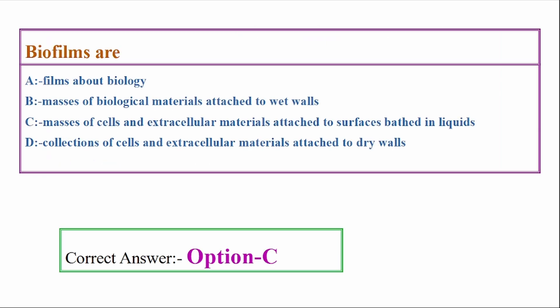Biofilms are: Options - films about biology, masses of biological materials attached to wet walls, masses of cells and extracellular materials attached to surfaces in liquids, collections of cells and intracellular materials attached to dry walls. Correct answer: Option C. Biofilms are masses of cells and extracellular materials attached to surfaces in liquids.